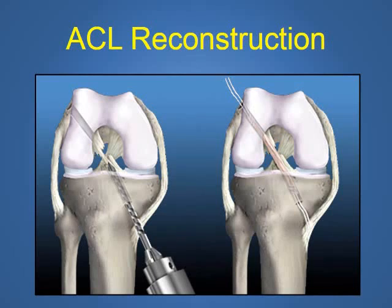This slide shows a schematic representation of an ACL reconstruction. In the image on the left, bone tunnels are drilled into the ends of the thigh bone and shin bone where the normal ACL should be attached. In the image on the right, a piece of tissue has been inserted into these tunnels to recreate the ACL.